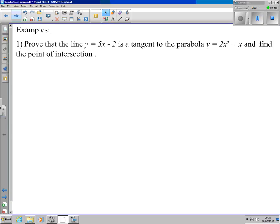Now you've got two examples I'm going to put into your notes as well. The first one: prove that the line y = 5x - 2 is a tangent to the parabola y = 2x² + x and find the point of intersection. There are two steps to this equation. We have to prove first of all it's a tangent and then find the point of intersection. There are two ways we can prove that it's a tangent. I'm going to show you both, but there's only one way to find the point of intersection, which is what we've done in the previous example.